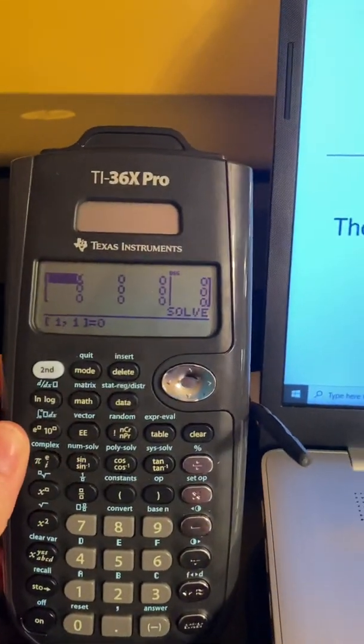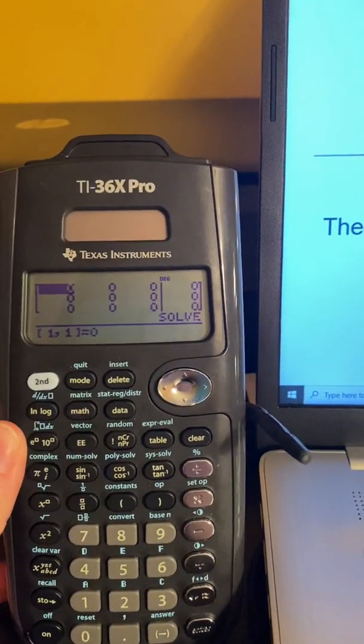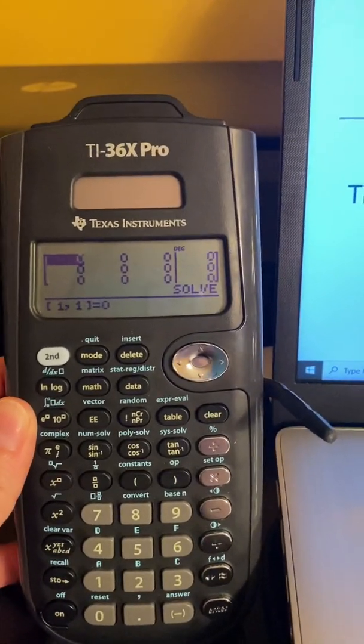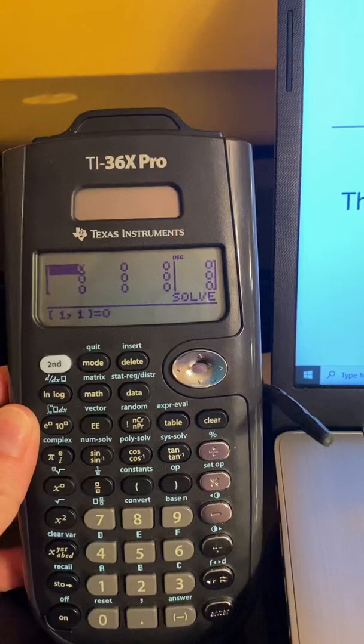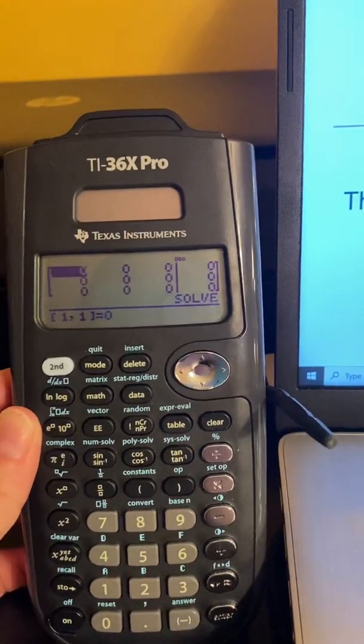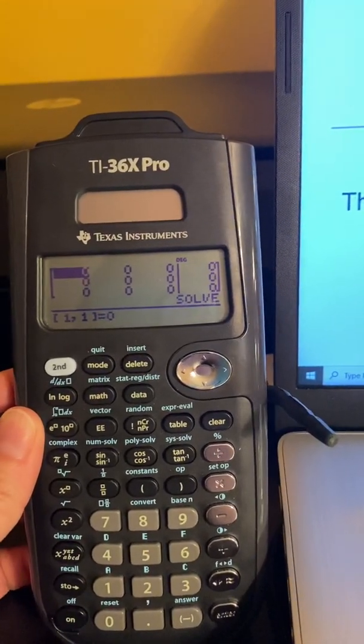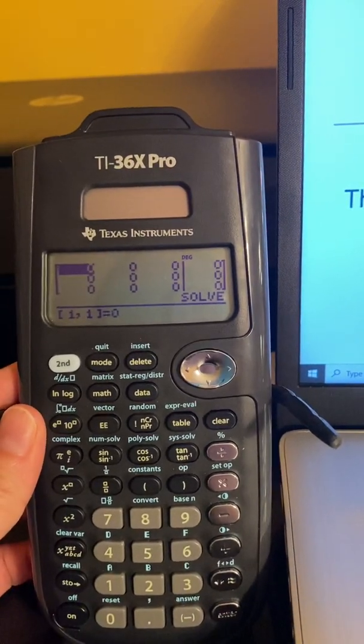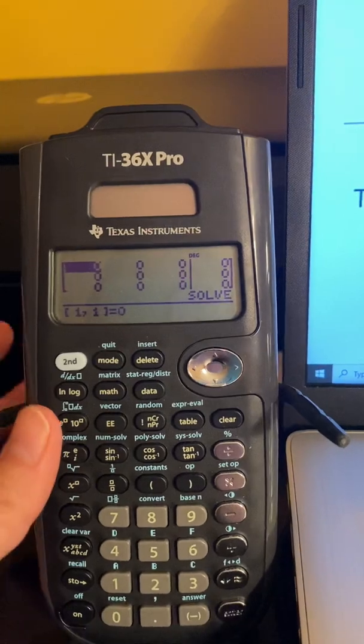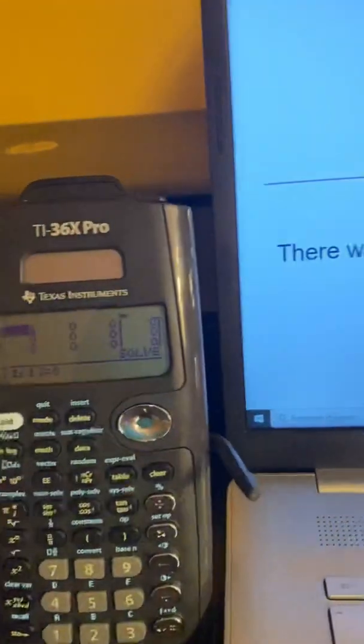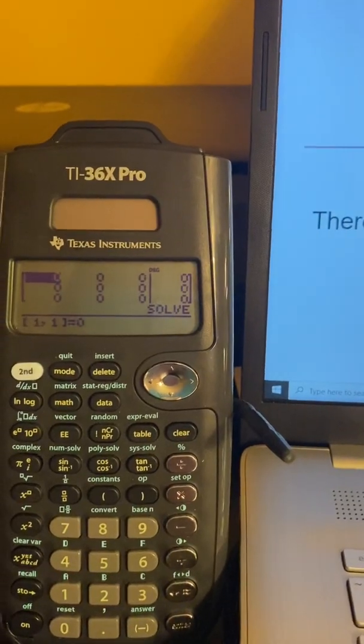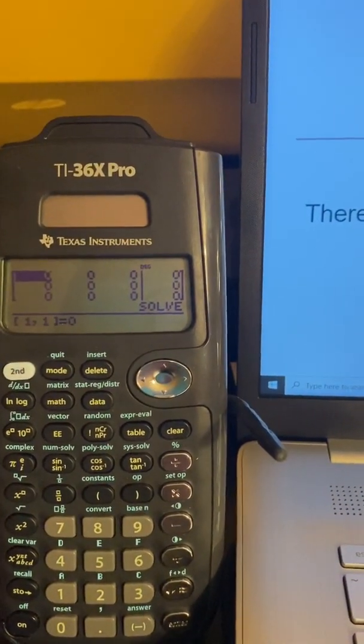So what we will input into this matrix are the coefficients of all of our terms. The first column is going to be the coefficient of our x terms. The second column will be the coefficients of our y terms. The third column will be the coefficients of our z terms. And then after the bar, that will be what our equations equal to.